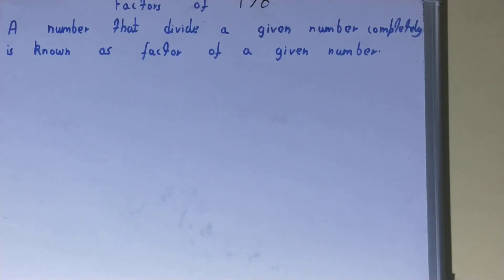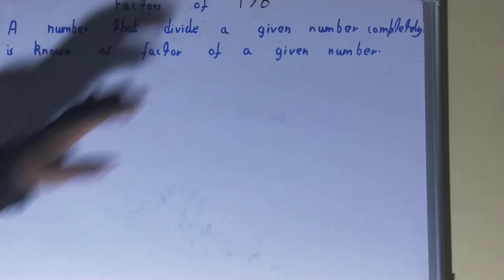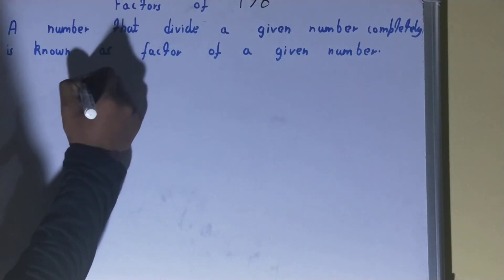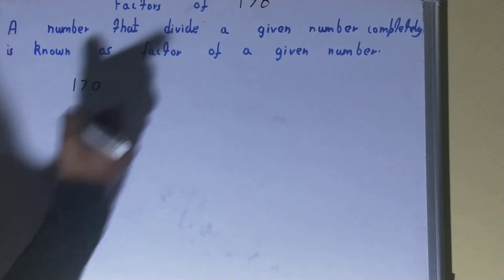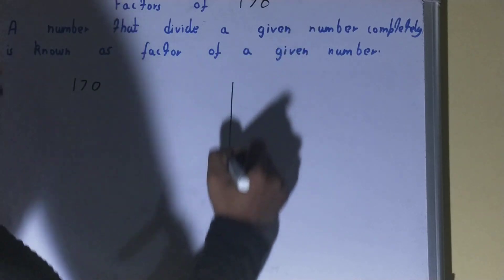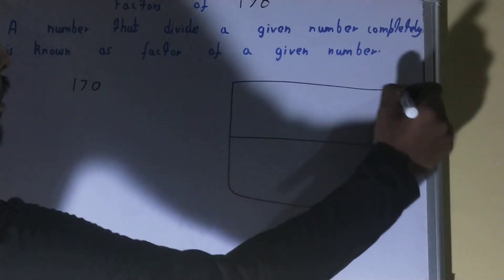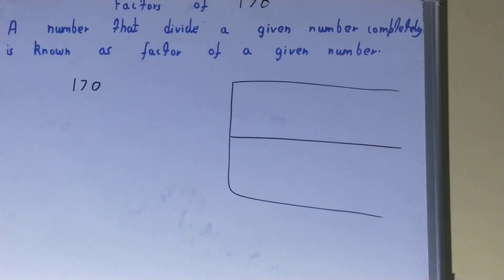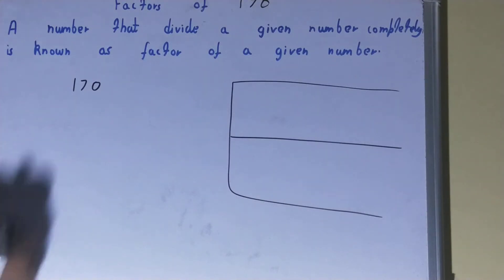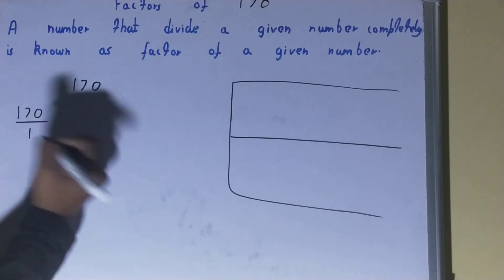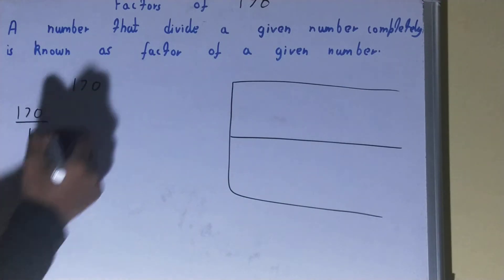Hello friends, in this video I'll be helping you with the factors of the number 170. To find them, you need to write the number and draw a factor table like this. Once you've done that, you need to start with the lowest natural number, which is 1.